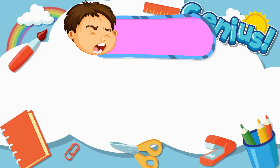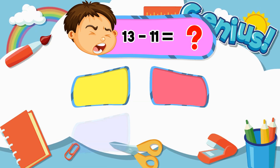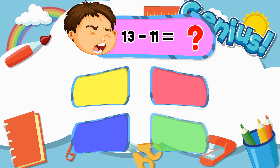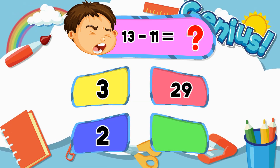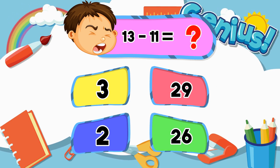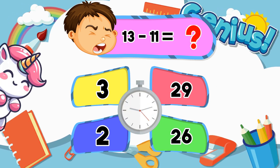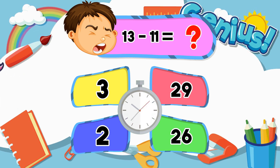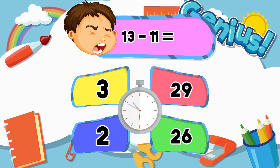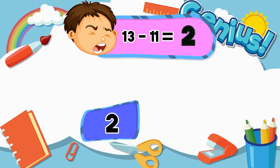What is thirteen minus eleven? Three. Twenty-nine. Two. Twenty-six. Two.